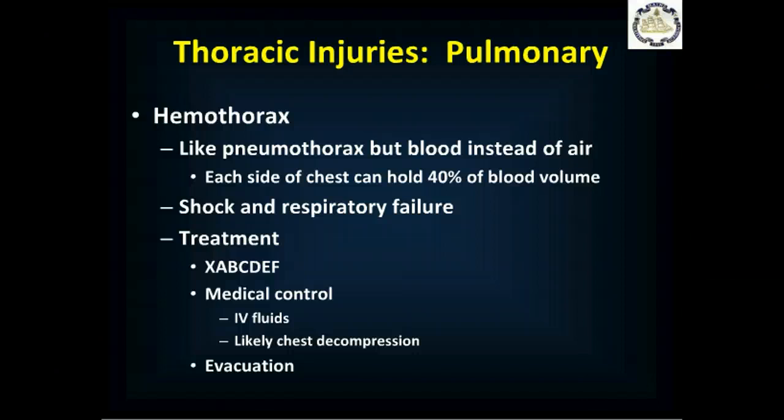Just like you get a pneumothorax with air, you can get a hemothorax with blood. Each side of the chest can hold 40% of your circulating blood volume, meaning bilateral hemothoraces can cause death from hypovolemic shock alone. These patients are in shock and have respiratory failure because blood in the pleural space is collapsing the lung. Treatment: XABCDEF, talk to medical control, give IV fluids aiming for permissive hypotension with a systolic blood pressure around 80 to 90. You'll likely end up doing chest decompression because you won't know if this is a pneumothorax or hemothorax. Evacuate all these patients.